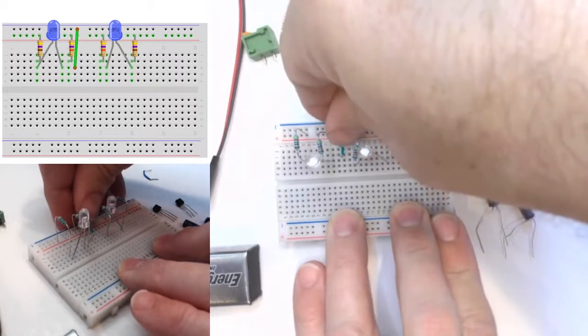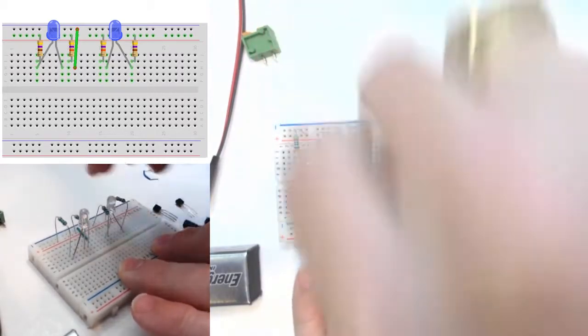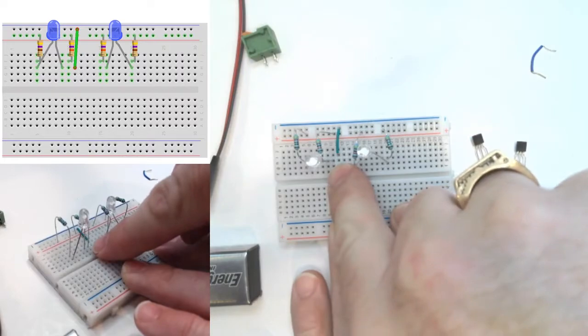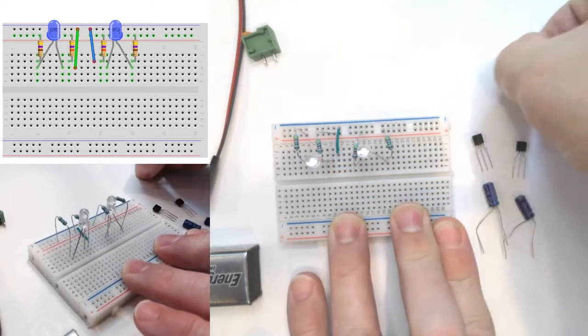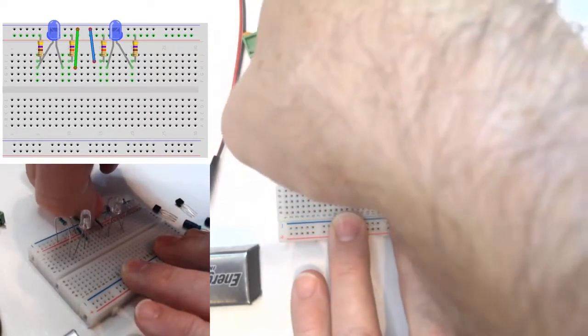Those will go to the other side of that 47k ohm resistor, the row next to the row with the resistor in it, and do the same thing on the other side.